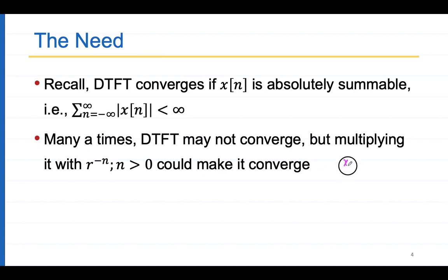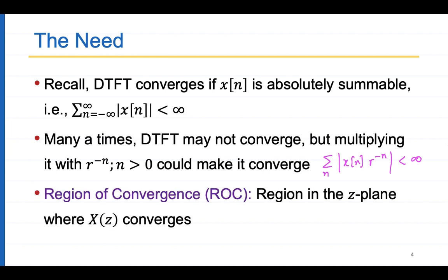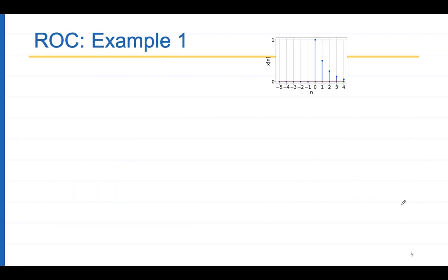If x[n] times r to the power minus n, summed over all n, is finite, then the Z-transform converges. This leads to the concept of the region of convergence (ROC) — the region in the Z-plane where X(z) converges. We want to find values of r such that when we take the DTFT of the scaled sequence, we get a valid closed-form expression. This will become clear with an example.